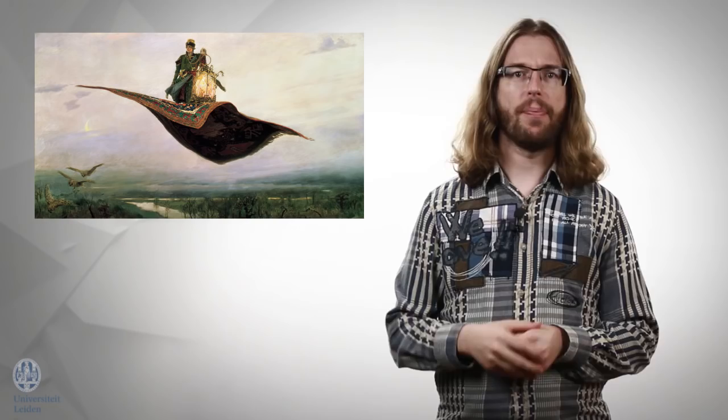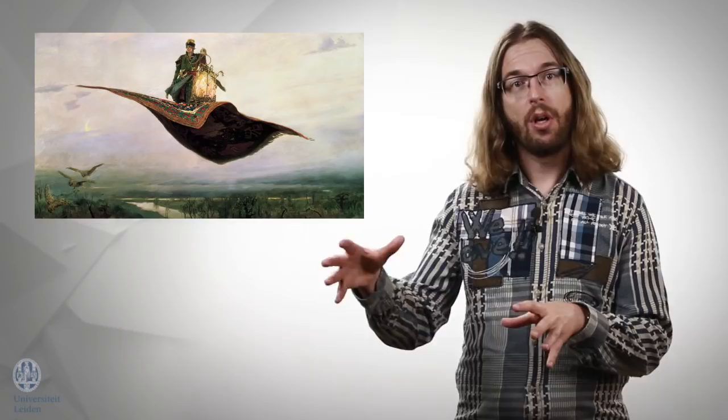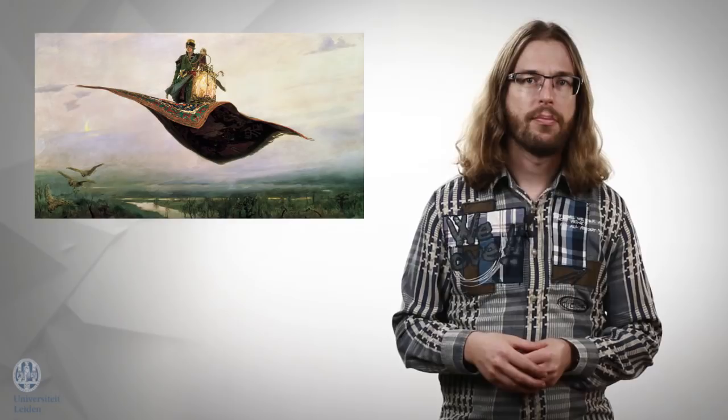The assumption that underlies Propp's whole project is that fairy tales have a fairly determinate structure. Early in the book, Propp gives us examples of scenes from fairy tales that are different on the surface but play an identical role in the story. A tsar gives an eagle to a hero. The eagle carries the hero away to another kingdom. An old man gives Suchenko a horse. The horse carries Suchenko away to another kingdom. A sorcerer gives Ivan a little boat. The boat takes Ivan to another kingdom. A princess gives Ivan a ring. Young men appearing from the ring carry Ivan away into another kingdom.